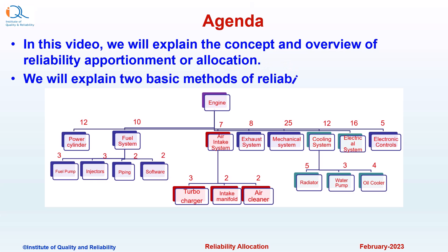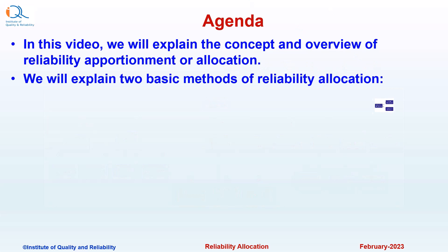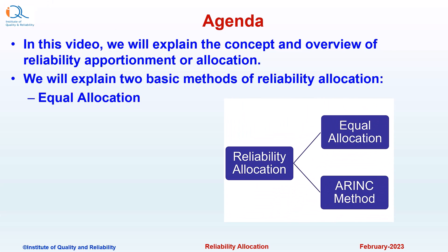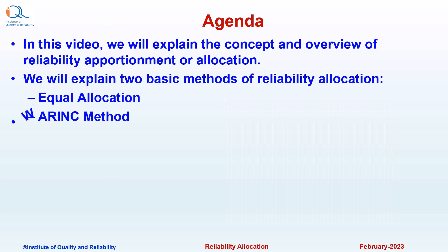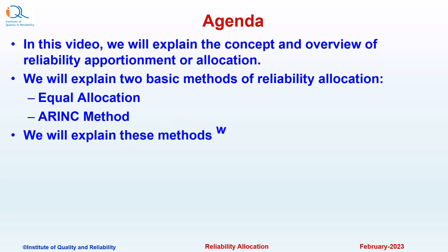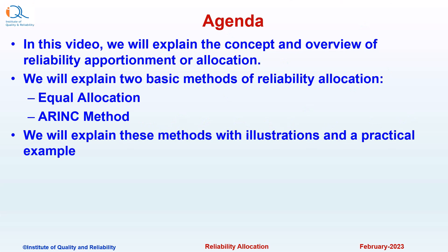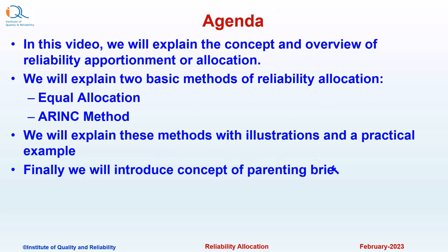We will explain two basic methods of reliability allocation. The first one is equal allocation and the second one is the ARINC method. We will explain these methods with illustrations and a practical example. Finally, we will introduce the concept of parenting briefly in this video.